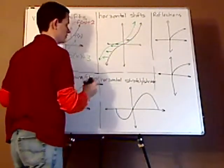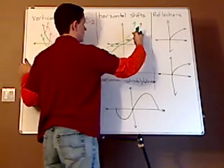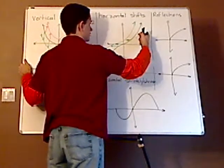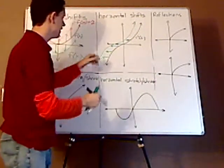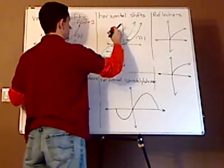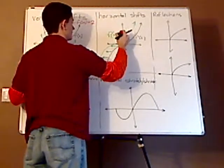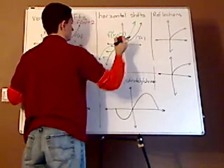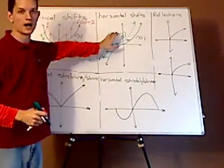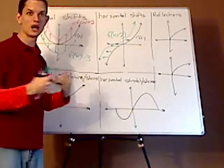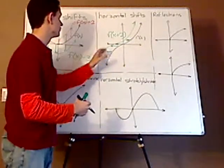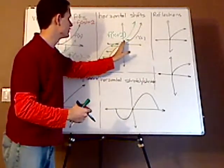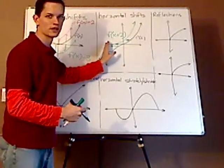I shifted two units. If this is f of x, then this is going to be f of x plus 2. It's going to be whatever the opposite, because it has to compensate, because it wants to restore it back to the original. Because the y's are staying the same, right?